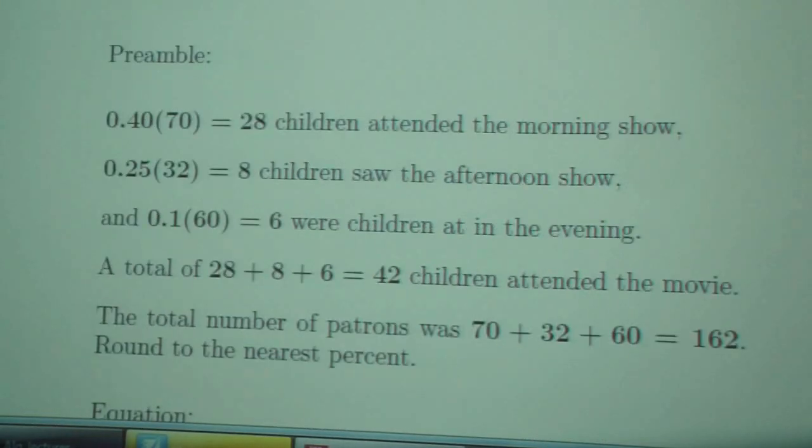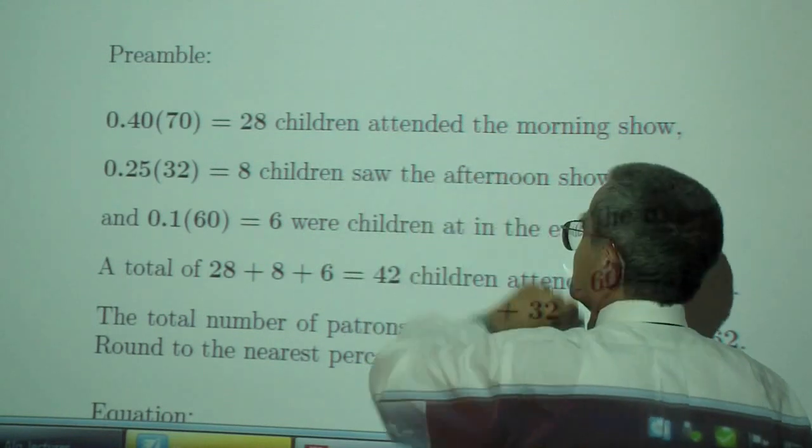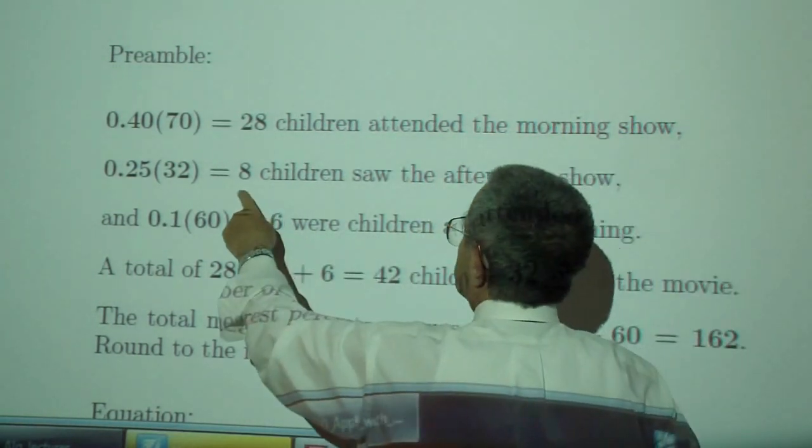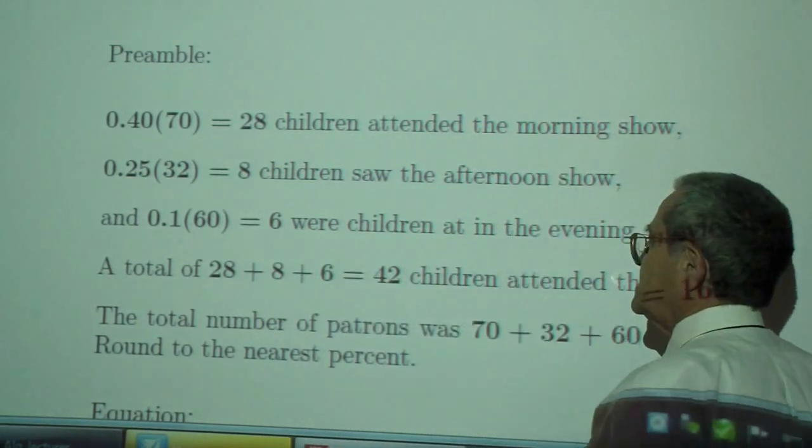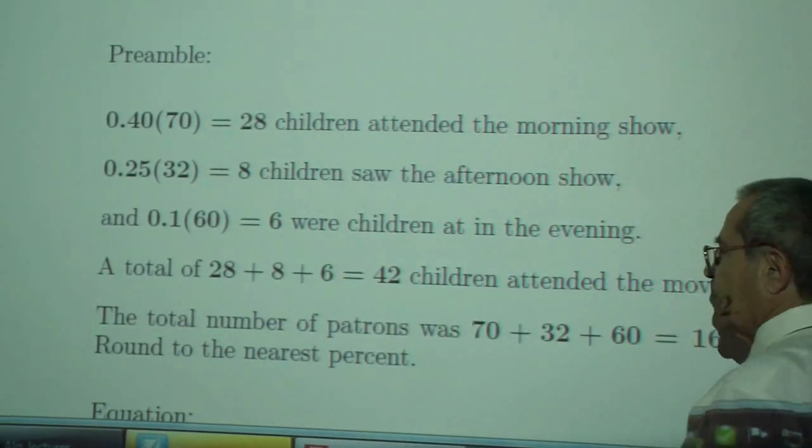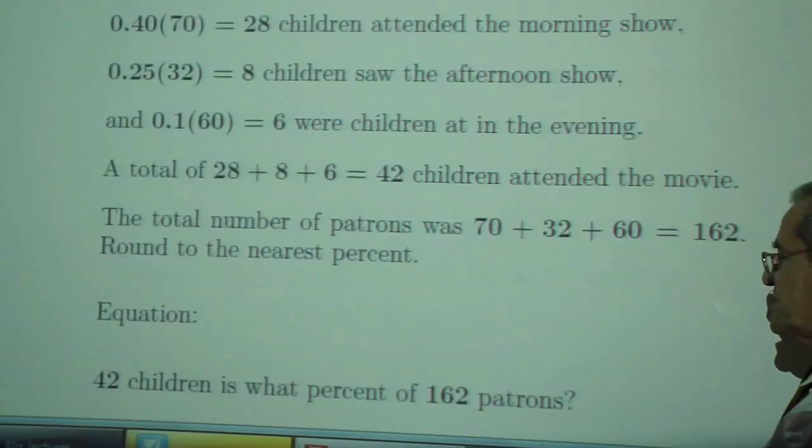And then the movie. 28 children attended the morning show, 8 children saw the afternoon show, and 6 were children in the evening. The total number of children was 42, the total number of patrons was 162.